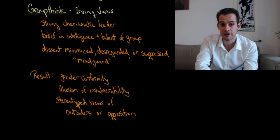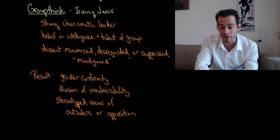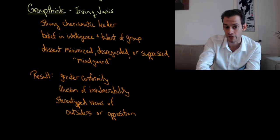So some of the factors that Janus proposed contributed to groupthink were things like having a strong and charismatic leader. Someone that the other group members wanted to impress or wanted to be on the good side of. So a leader like John F. Kennedy during the Bay of Pigs invasion might have been somebody that was a strong charismatic leader that other people were less inclined to disagree with or to point out potential flaws.